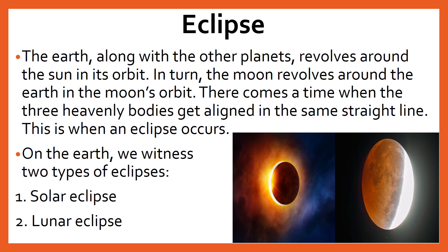Students, as we know, the earth along with the other planets revolves around the sun in its orbit. In turn, the moon revolves around the earth in the moon's orbit. But there comes a time when the three heavenly bodies get aligned in the same straight line — this is when an eclipse occurs. On the earth, we witness two types of eclipses: solar eclipse and lunar eclipse.